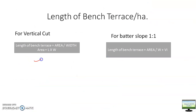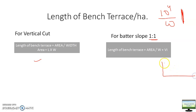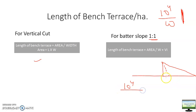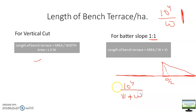For length of bench terrace, per hectare it is 10 to the power 4 divided by the width of bench terrace — this is for vertical cut. For 1 raised to 1 batter slope, considering the triangle for the cut, it becomes 10 to the power 4 divided by the total horizontal span, which is twice the depth of cut (i.e., the vertical interval) plus the full bench width W. So the denominator becomes VI plus W for 1 raised to 1.